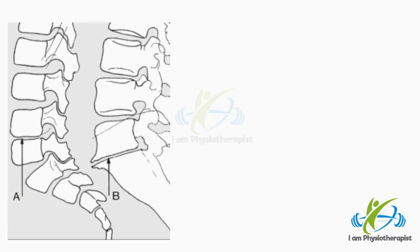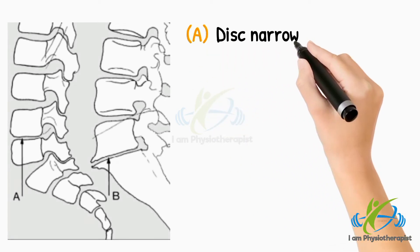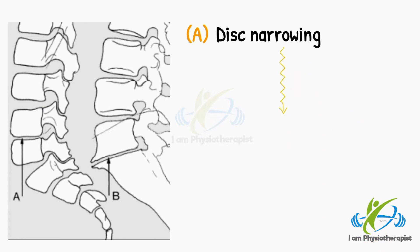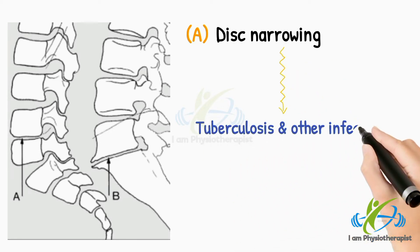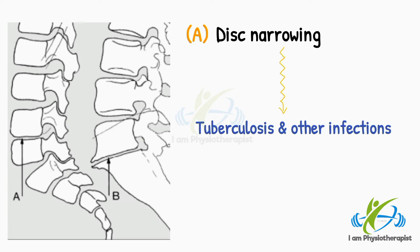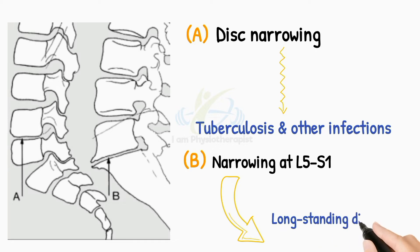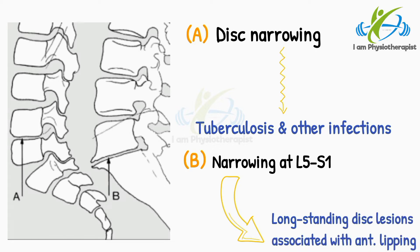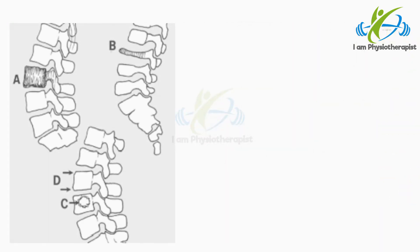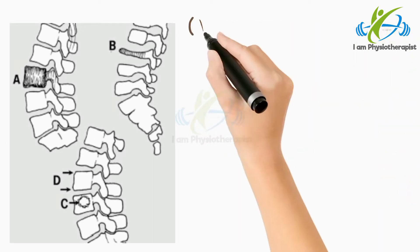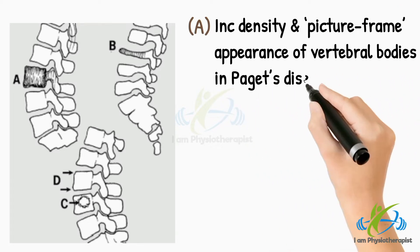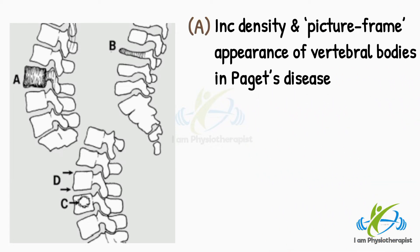In this radiograph, point A shows disc narrowing at any level in the spine, which is the earliest evidence of tuberculosis and other infections. Point B shows narrowing at L5-S1; less commonly, narrowing in the two spaces above occurs in long-standing disc lesions, and is often associated with anterior lipping. Point B shows increased density in the picture-frame appearance of the vertebral bodies in Paget's disease.